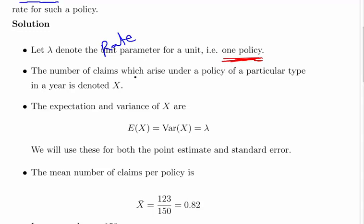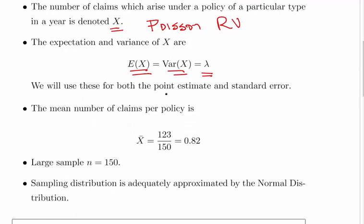Let the total number of claims which arise under a policy be denoted as X. So essentially what we're saying is this is a Poisson random variable X. And the mean of X, the expectation of a Poisson random variable in general, is that the expectation equals the variance equals lambda, the rate parameter. Now, we can use these to find the point estimate and the standard error, which is great. The mean number of claims per policy, so x bar equals 123 divided by 150, that should work out to be 0.82.